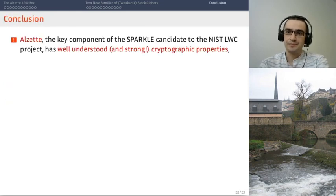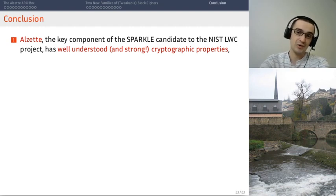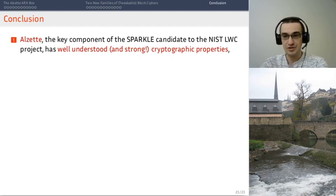Time to wrap up. So, ALZET, which is the key component of the SPARKLE permutations, which are themselves the key components of our NIST lightweight crypto submissions, has well understood, which is what we want an S-box to have, and strong cryptographic properties. So, this provides new light, more light on the analysis of this NIST candidate.